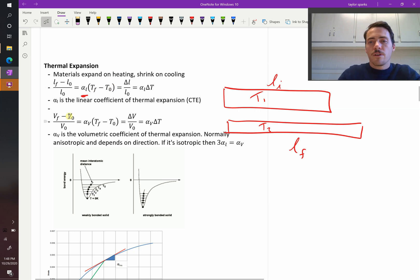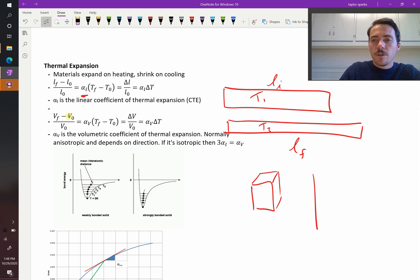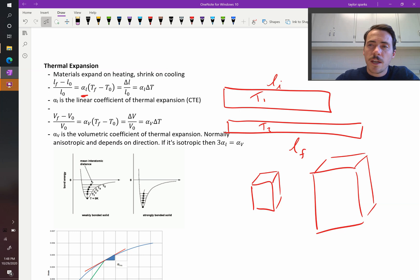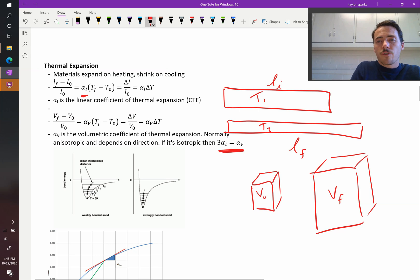But you could also do this on a volumetric basis. The volume of your sample starts out smaller, and then when you heat it up, it got larger. This is obviously very exaggerated. So you could take into account your final volume versus your initial volume, and you could calculate the volumetric thermal expansion coefficient. Both of those are possible. If your material is isotropic, meaning it expands equally in all three dimensions, then your volumetric thermal expansion coefficient will just be equal to 3 times your linear thermal expansion coefficient.